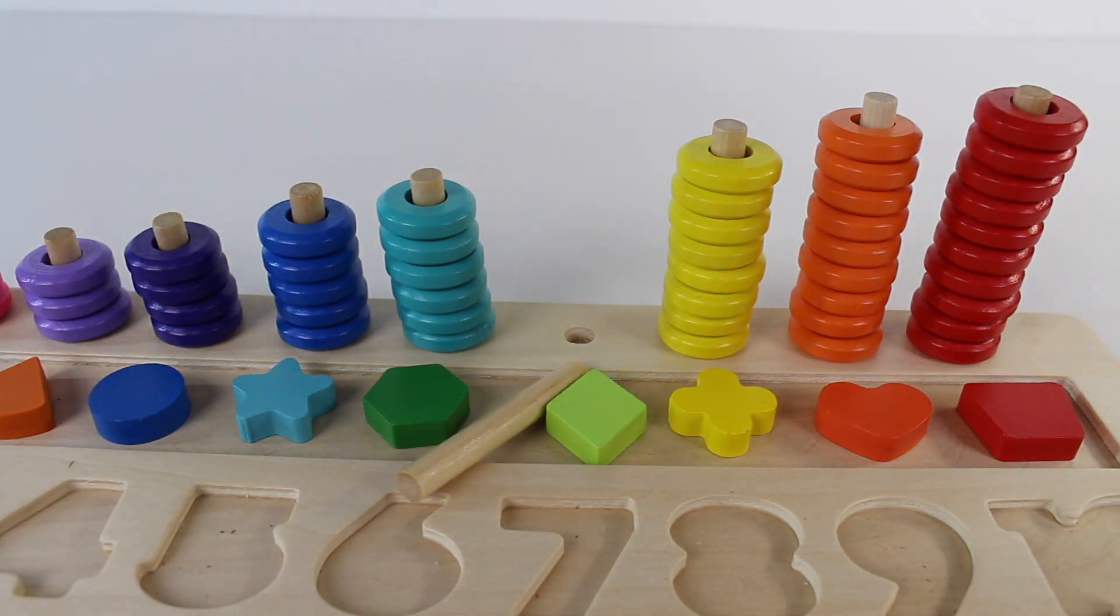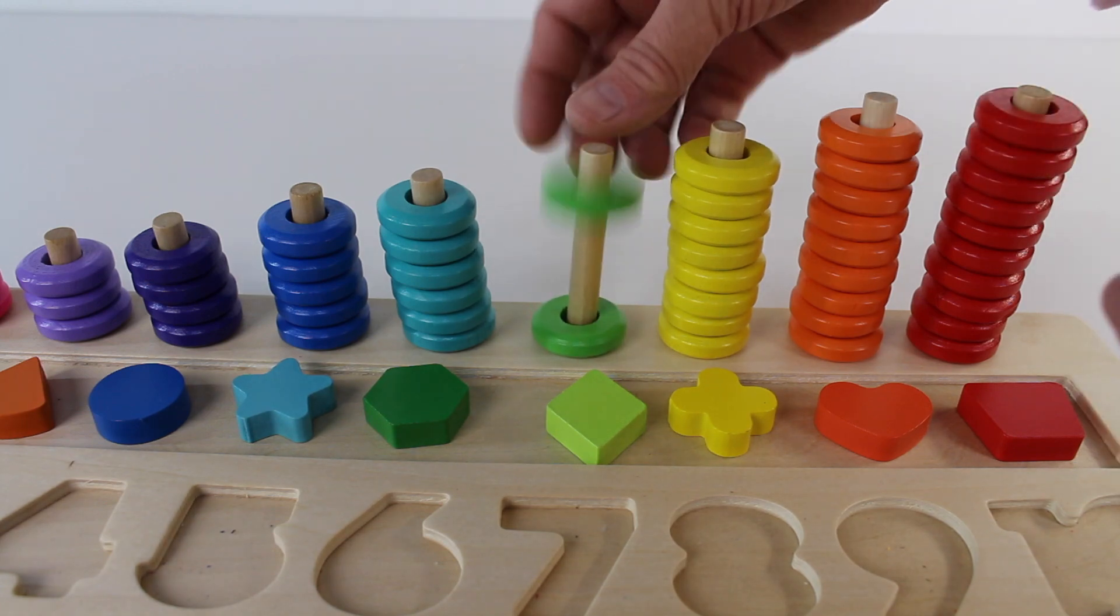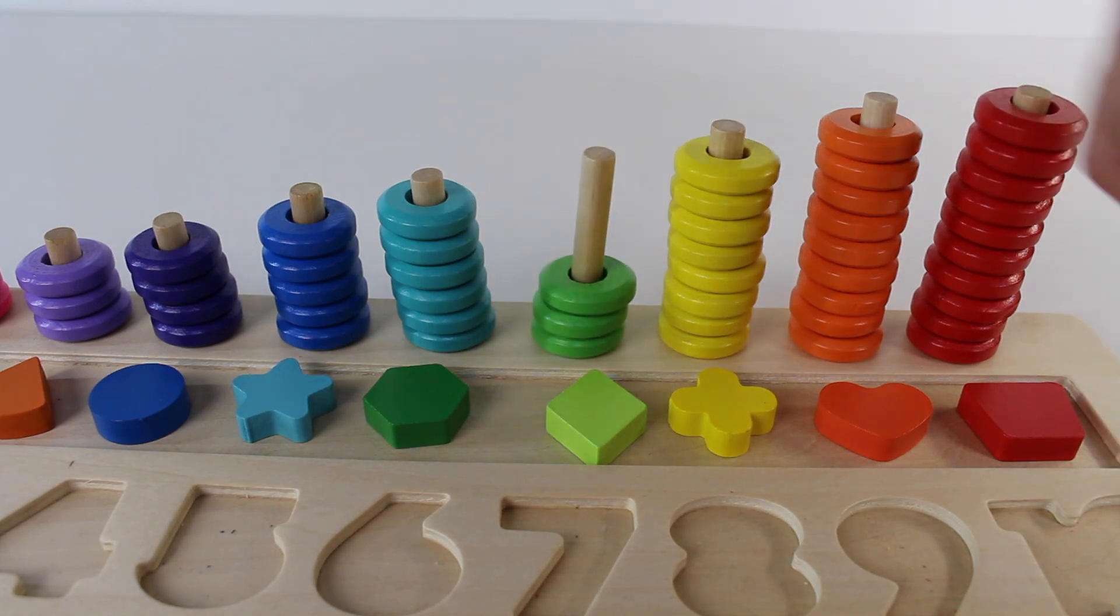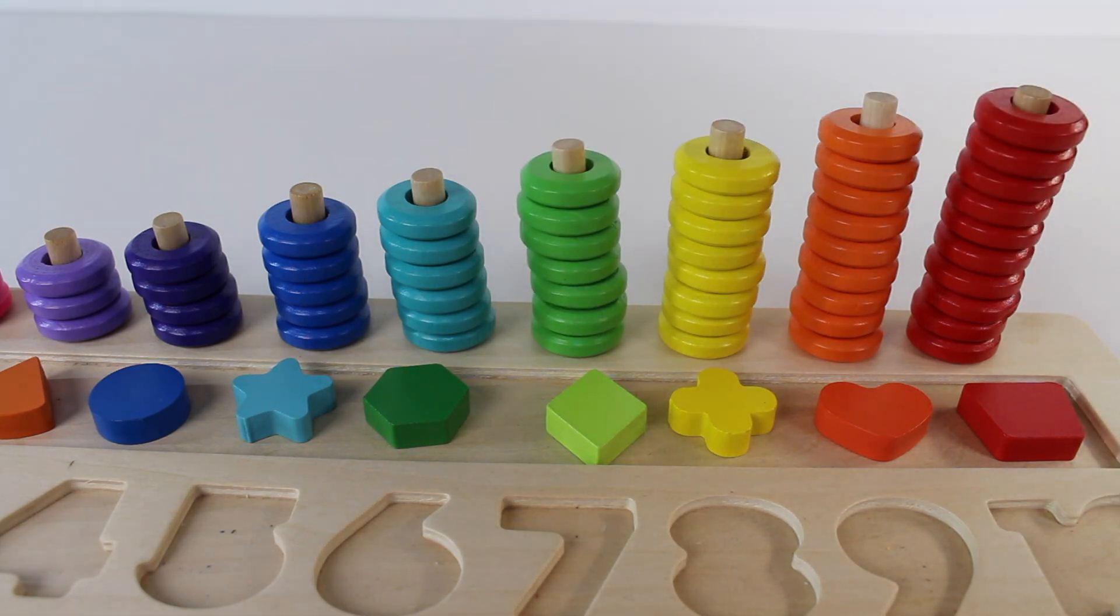Oopsie! Look at that. This is a dowel. This is what we place the rings on. One, two, three, four, five, six, seven rings.